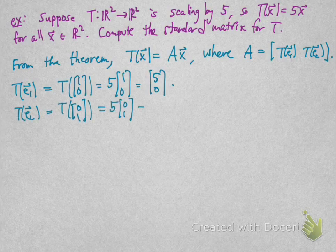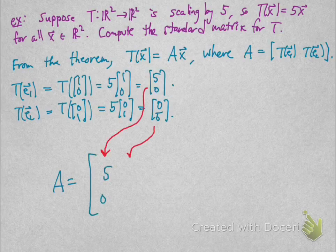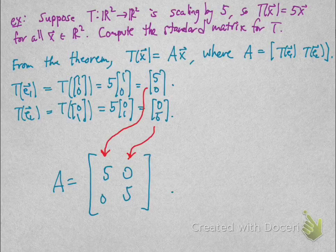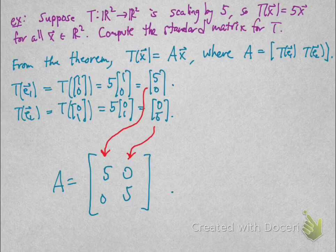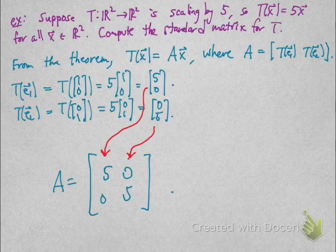T(E_2) is T evaluated at (0,1), which is 5 times (0,1), so that's (0,5). You put those as columns of matrix A, and that is the standard matrix for this linear transformation.